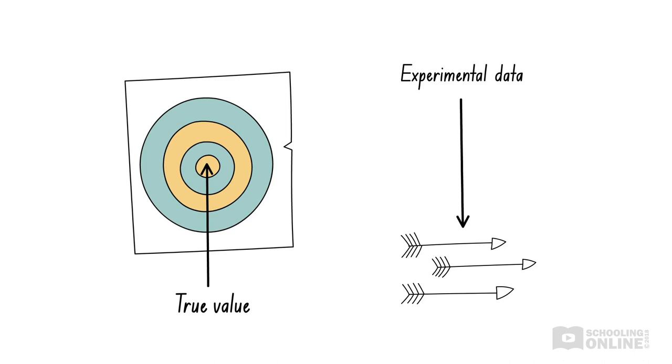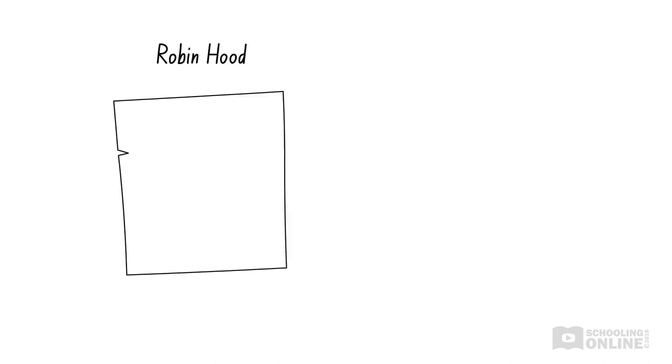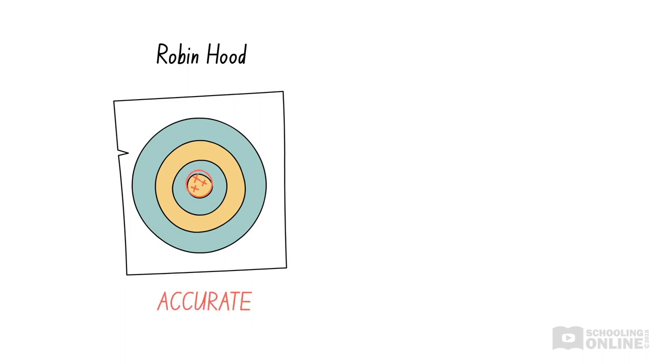This works the same way as accuracy in science. The bullseye represents the true value of what we are trying to measure. The arrows are the experimental data we obtained. If our experimental method is accurate, like Robin Hood, then our results will be, in general, close to the true value.